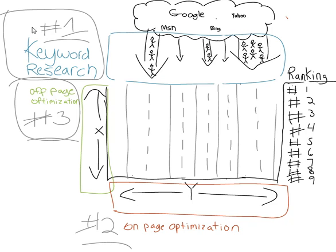So right off the bat, when people think of search engine optimization, if you just ask any random person, they'll usually refer to search engine optimization as on-page optimization — essentially modifying your website, updating your title and description and all of that stuff. That's what you think of generally when you think of search engine optimization.